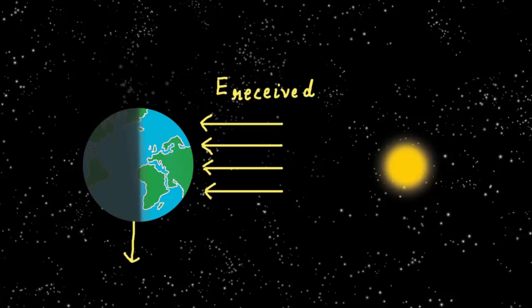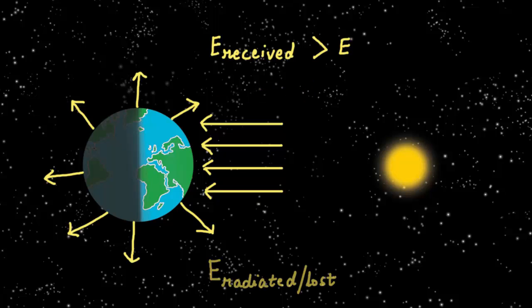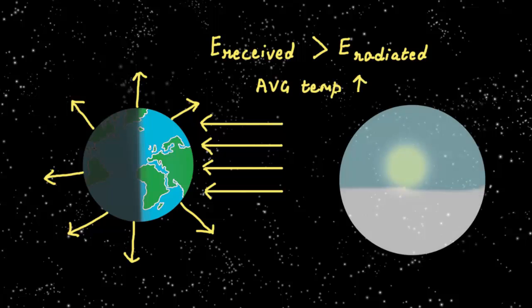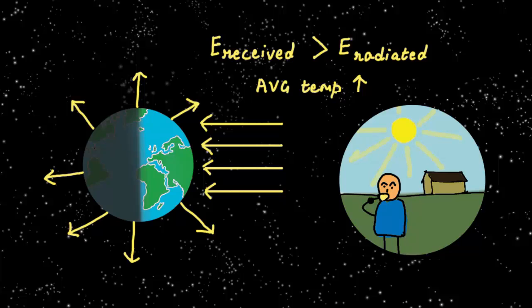When we think of the causes of the seasons, we realize that the amount of heat or energy that we get from the sun changes during the year. If more energy is received than is lost, our location gets warmer and we have summers.